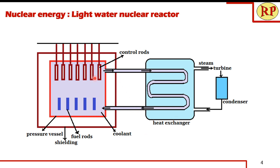The coolant carries heat from the reactor core to the heat exchanger, which contains liquid water at ambient temperature. The heat is transferred to this water, converting it to high-pressure steam, and the coolant returns back to the reactor core to be reused. The high-pressure steam rotates the blades of the turbines, which are coupled with a generator to produce electricity. The steam is then condensed back using a condenser and the liquid water is returned to the heat exchanger in a cyclic process.